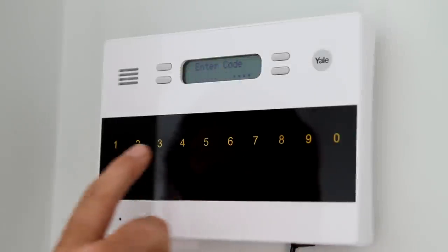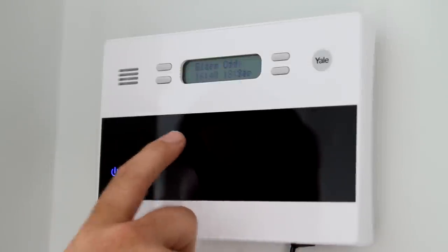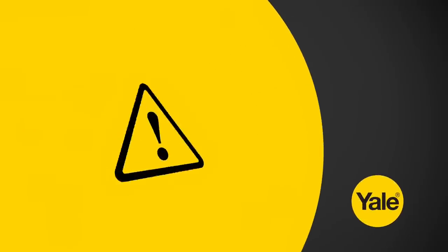To disarm the system, simply touch the display to wake it up and press the green disarm symbol. You will be prompted to enter your pin. Do this using the numbers which are lit up. The system is now disarmed.